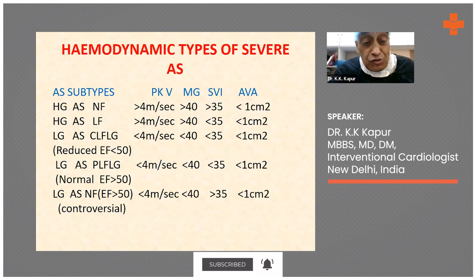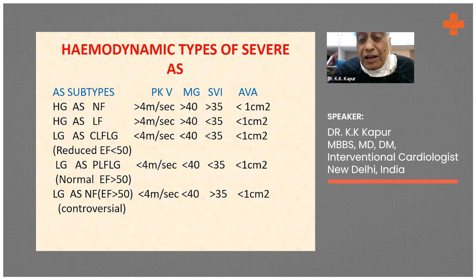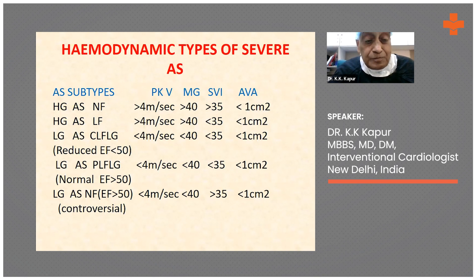It's a high gradient aortic stenosis, but sometimes they don't go hand in hand. The mean pressure gradients may be low, the peak velocity across the aortic valve may be lower, but the aortic valve area would also be low. Accordingly, we also get what is called low gradient aortic stenosis.